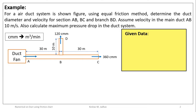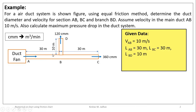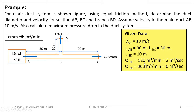First we will write the given data. Velocity in main duct AB is given, so V_AB equals 10 meters per second. From the figure, length AB equals 30 meters, length BC equals 30 meters, and length of branch duct BD equals 10 meters. Volume flow rate through branch duct BD is 120 CMM, which is 120 cubic meters per minute. Dividing by 60, Q_BD equals 2 cubic meters per second.